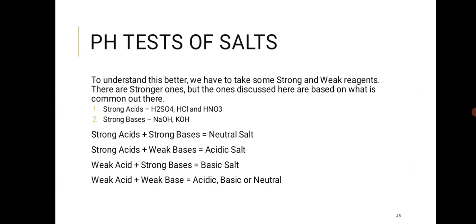For the pH test of salts: if a salt has a hydrogen ion, it is acidic; if it has a hydroxide ion, it is basic. To determine whether a neutral-looking salt is acidic, basic, or neutral, you need to know the strong acids and strong bases. The strong acids are H2SO4, HCl, and HNO3.